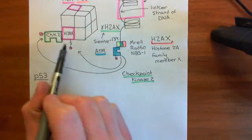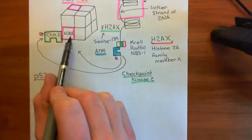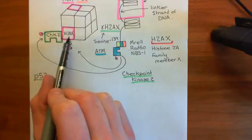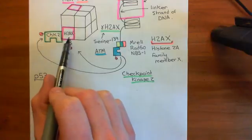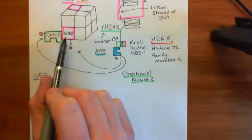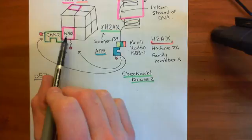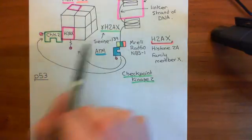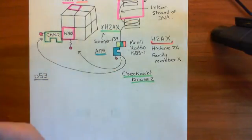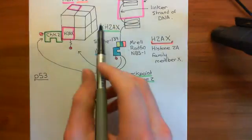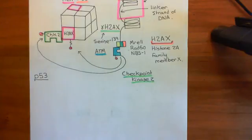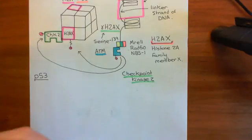The activated ATM is then going to phosphorylate a specific member of the histone 2A family of histone proteins, which is histone 2AX. When you phosphorylate histone 2AX — specifically on serine 139 — it causes a massive conformational change of this histone 2AX protein, and it is now called gamma-histone 2AX. This gamma-histone 2AX can bind to a huge number of different proteins which are going to be recruited to it.